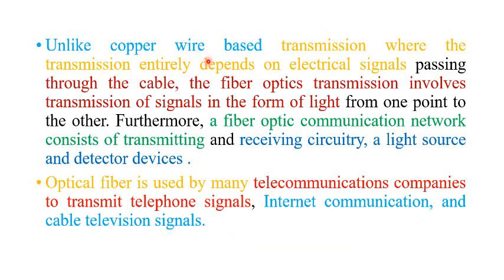Unlike copper wire or electrical cable based transmission, where transmission entirely depends upon electrical signals passing through the cable, fiber optical transmission involves transmission of signal in the form of light from one point to another. An optical fiber communication network consists of transmitting and receiving circuitry, a light source, and a detector device. Optical fiber is used by many telecommunication companies to transmit telephone signals, internet communication, and cable television transmission.